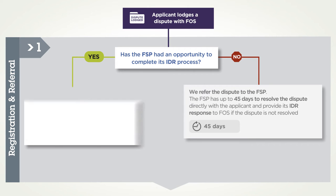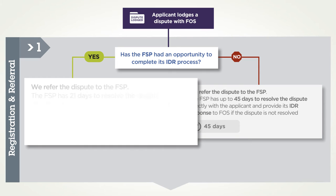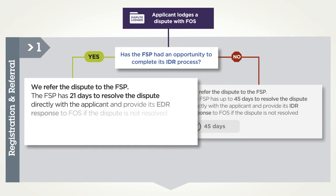If the answer is yes, in most cases the FSP has 21 days to resolve the dispute directly.